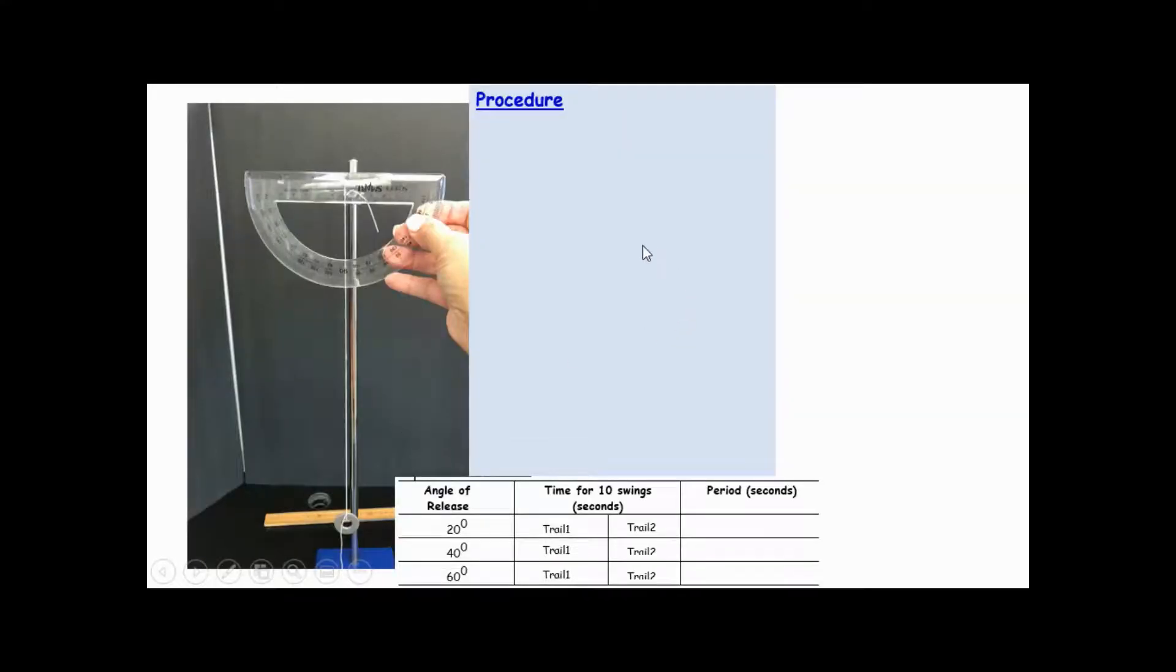Now, let me go with the procedure. Use a protractor. Pull out the pendulum to 20 degrees from the vertical reference line. So this is the vertical reference line, 0 degrees. This is 10. This is 20.